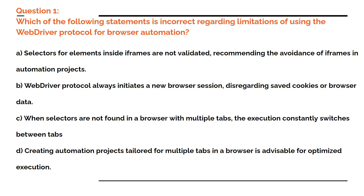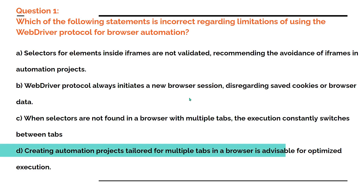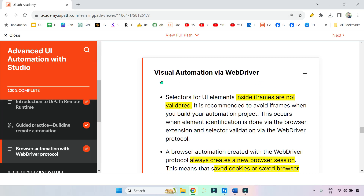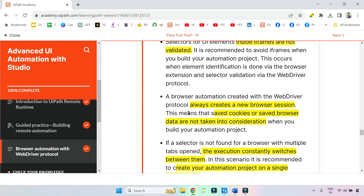The answer is D: creating automation projects tailored for multiple tabs in a browser is advisable for optimized execution — this is the wrong statement. The rest — A, B, C — are correct options. You can find this answer in the paragraph on visual automation WebDriver; if you go through that paragraph you will get your answer.